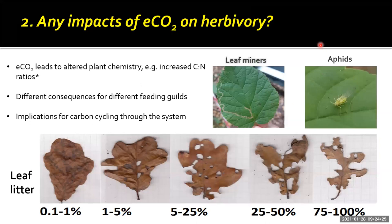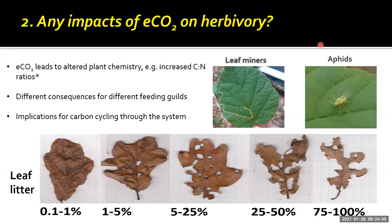Moving on to the impacts on plants — the first thing we looked at was herbivory. We know from a number of studies that elevated CO2 alters plant chemistry, with one of the most common responses being an increase in carbon-to-nitrogen ratios. This changes the nutritional value of the plant to an insect and therefore we're anticipating potentially different responses. Those responses could be different between different feeding guilds. Two of the groups we focused on were leaf miners — here's an example of a leaf mine — and aphids.